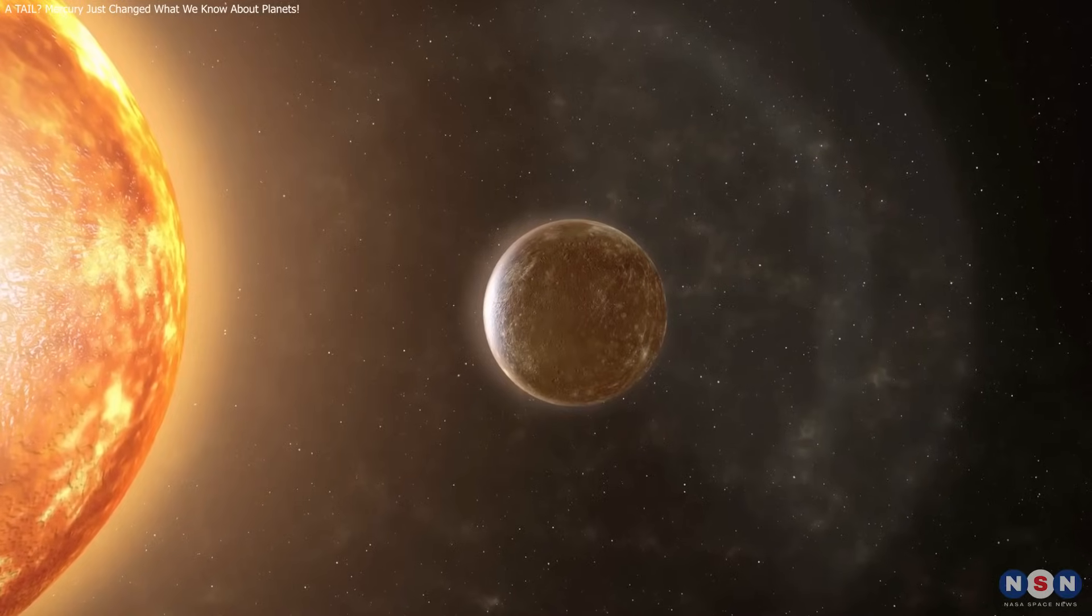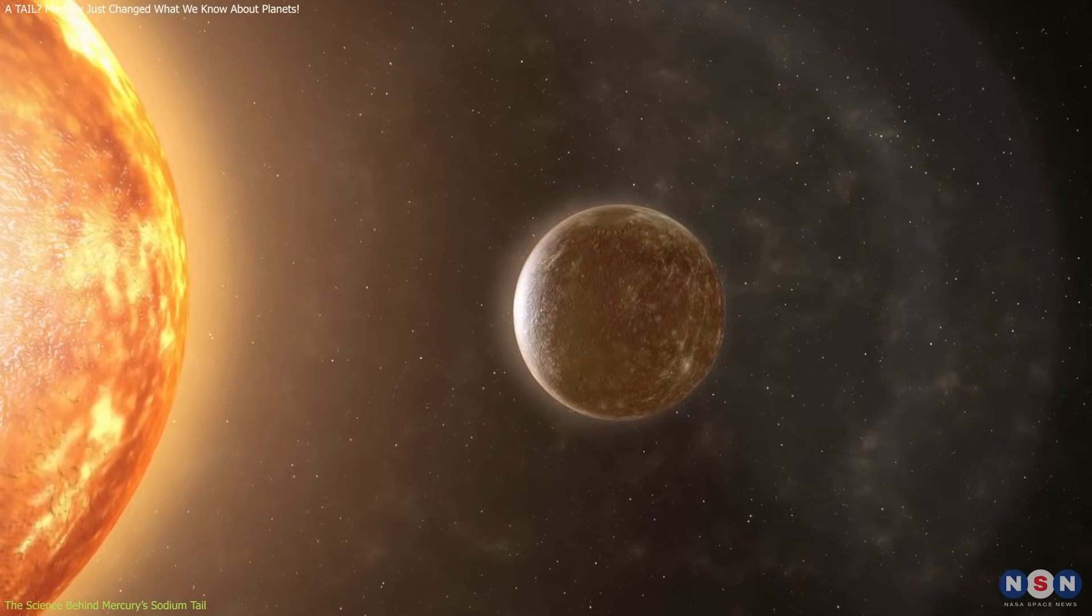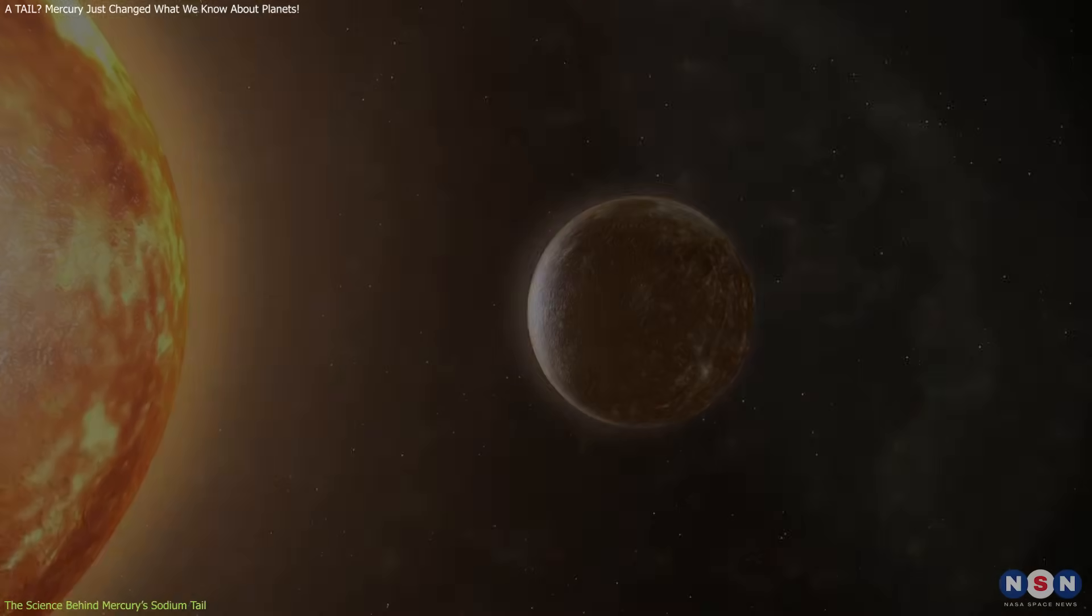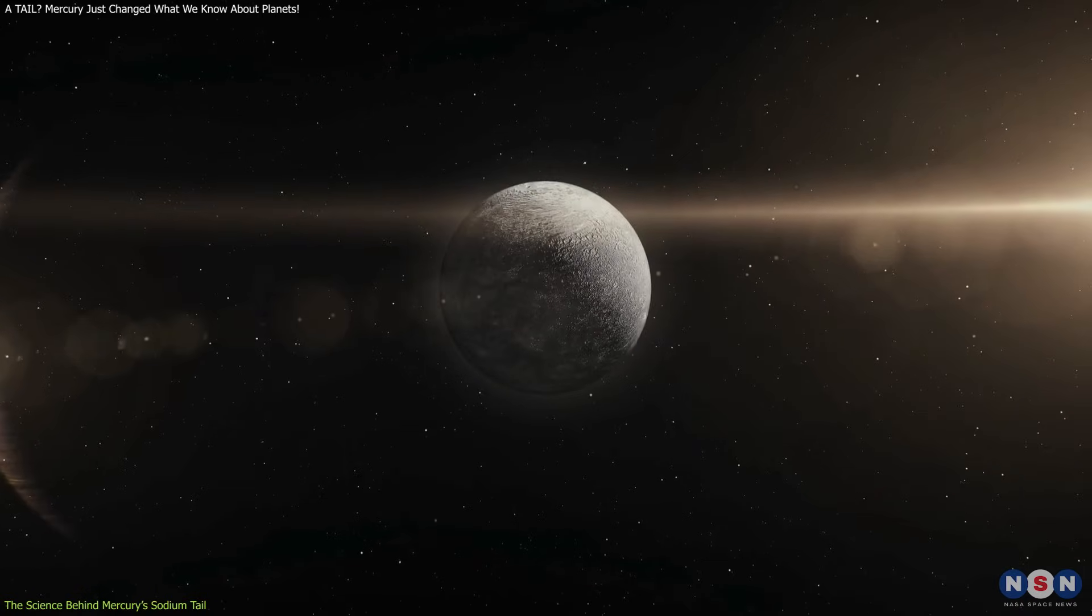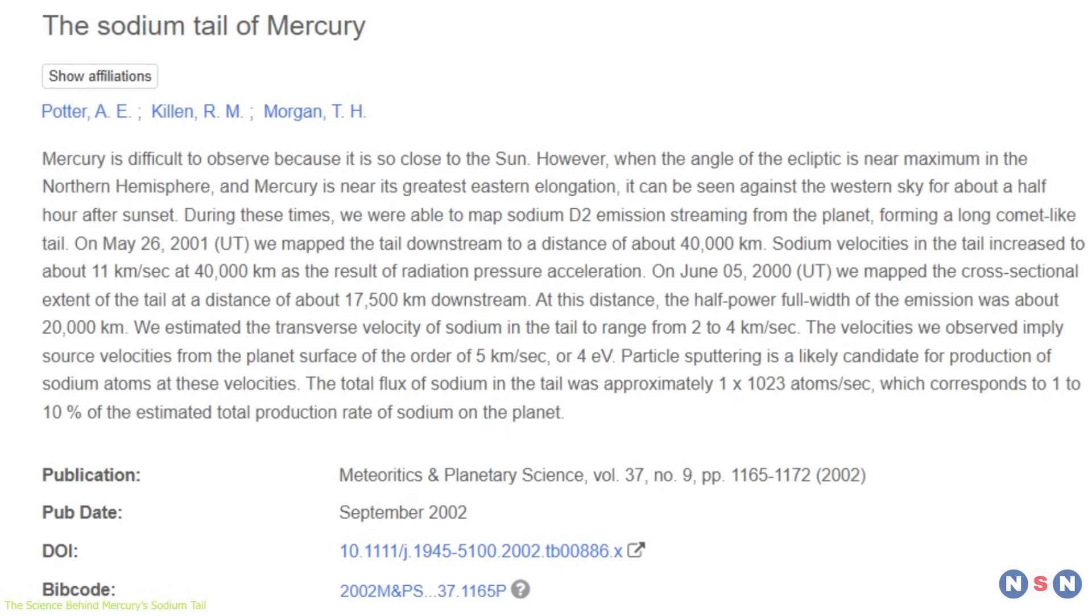Mercury, the smallest planet in our solar system, has long been considered a quiet, scorched world. However, recent observations have revealed something extraordinary. It's shedding a tail made of sodium atoms, stretching millions of kilometers behind it. This tail was first confirmed in 2001, but new studies show just how massive and dynamic it is.